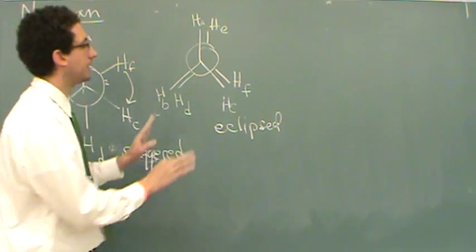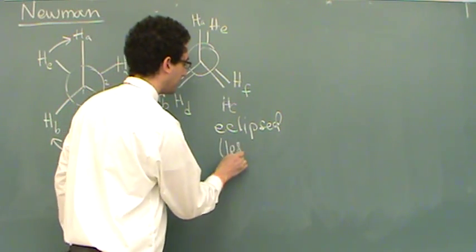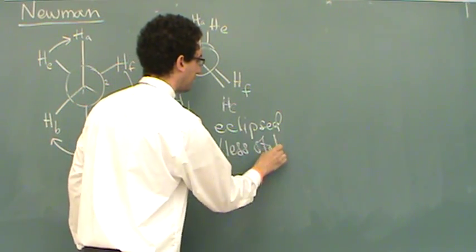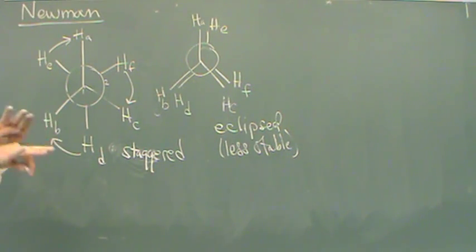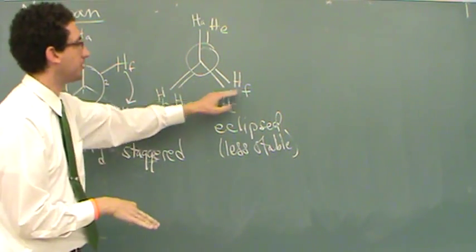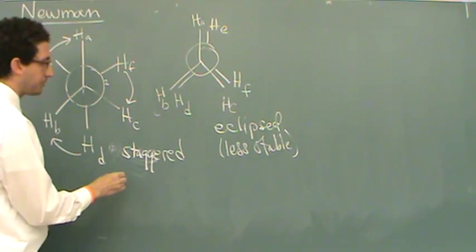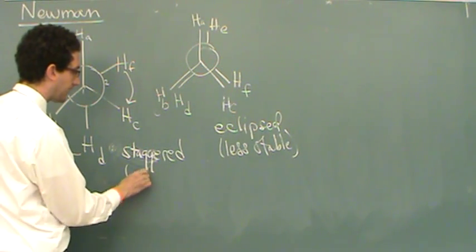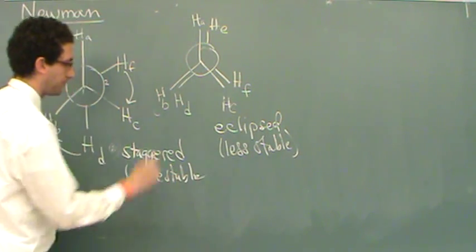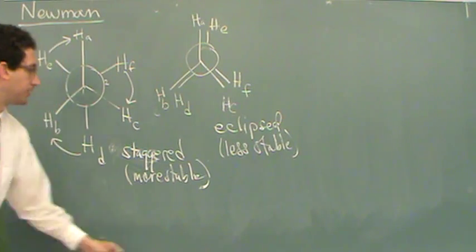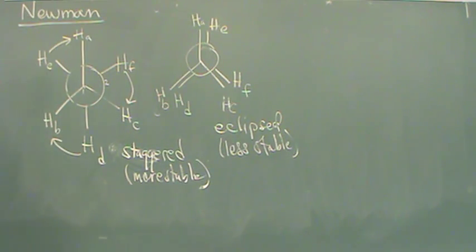Because of sterics, this one is less stable. Sterics is whenever you get entities with electrons too close to each other. They don't like it. They are too close. It would prefer to be staggered, which is more stable. So the staggered position, definitely more stable.